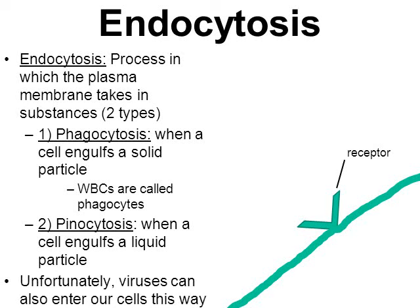Unfortunately, viruses can also enter our cells through the process of endocytosis. On the outside of cell membranes, we have little structures called receptors. In the animation, a virus will match the receptor. Normally when an object matches the receptor, that object is a needed molecule — the cell needs it on the inside. But viruses have adapted to match our receptors and trick our cells into thinking the virus is a needed molecule or nutrient.